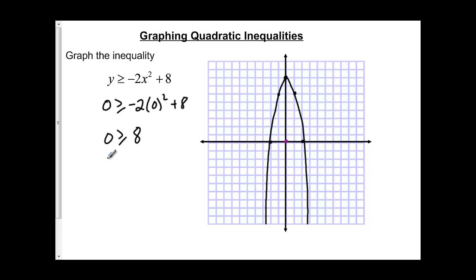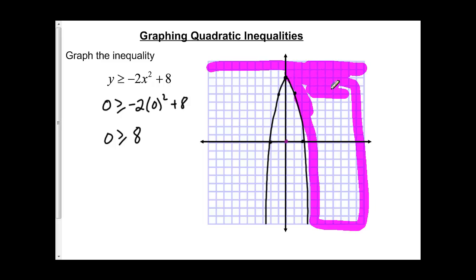which translates to 0 is greater than or equal to 8. That is not a true statement. 0 is not greater than 8. So I'm going to have to shade the side of my graph that does not include my test point. Since the test point is under the parabola, I'm going to shade everything that is not included in the parabola.